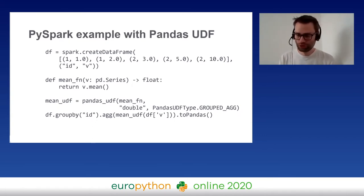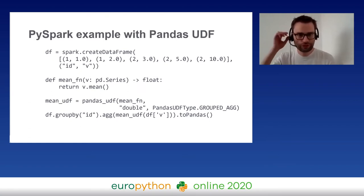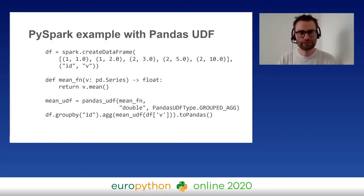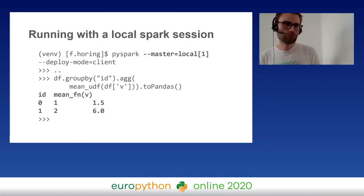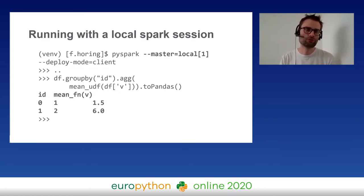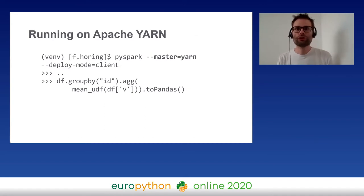The example itself isn't so important — it's more about having a real use case. I create a DataFrame with two columns, and for each group I call a custom Python function `mean_fn` that just computes the mean. I can execute this on my local machine with the Spark shell, and I get my Pandas DataFrame: group 1 gives 1.5, group 2 gives 6 as the mean.